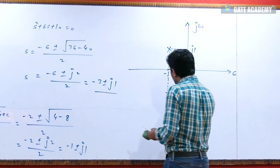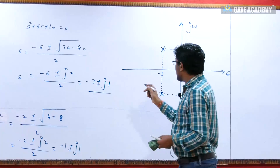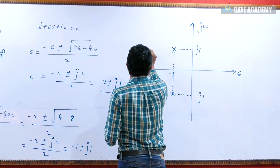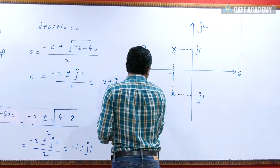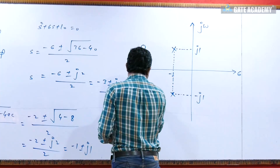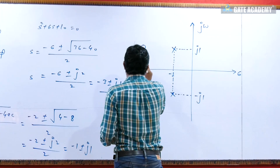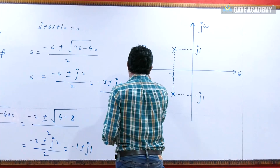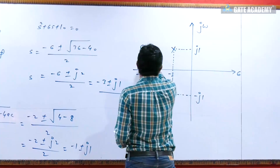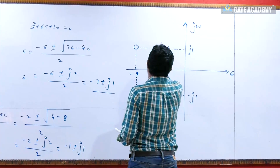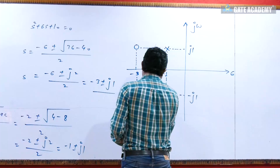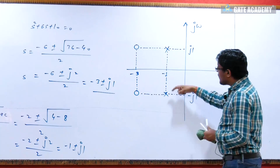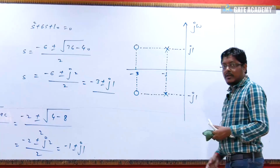So the complex conjugate zeros are minus 3 ± j1. In the pole-zero diagram, the real part is minus 3, the imaginary part is +j1 and minus j1. The complex conjugate poles have real part minus 1, imaginary part +j1 and minus j1. You need to make a good pole-zero diagram to graphically calculate the angle of departure and angle of arrival.